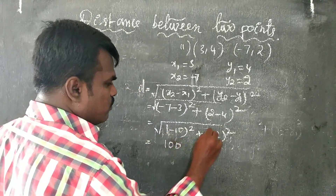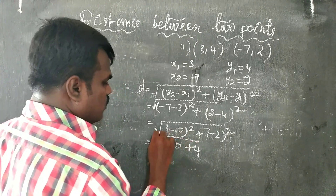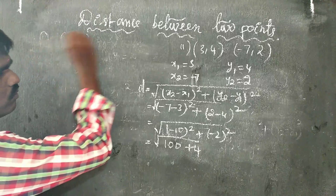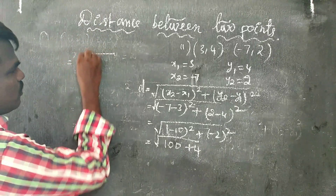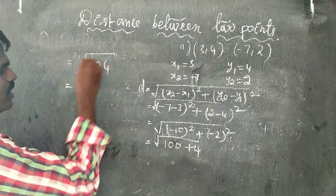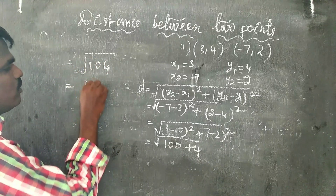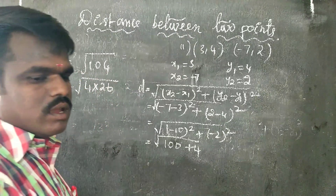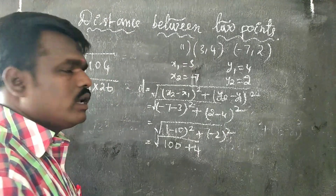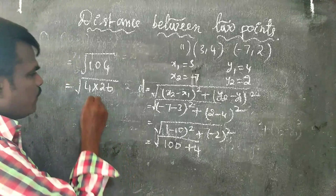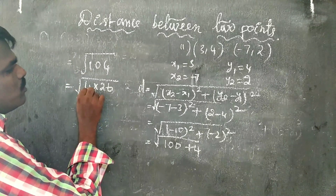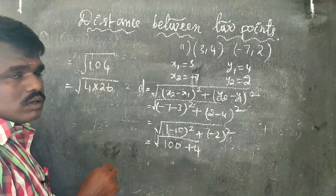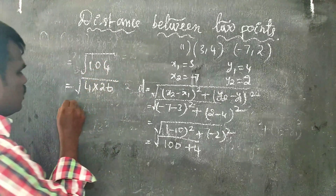Continuing the calculation: √(100 + 4) = √104. Simplifying √104 = 2√26 units.